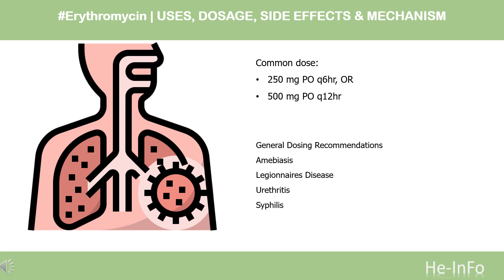Dose: The dose of this medicine will be different for different patients. General dosing recommendations: 250 mg PO every 6 hours, or 500 mg PO every 12 hours, if daily dose does not exceed 1 g. May increase to 4 g per day depending on infection severity. Amoebiasis: 500 mg PO every 6 hours for 10 to 14 days. Legionnaire's disease: 1–4 g per day PO in divided doses for 21 days.